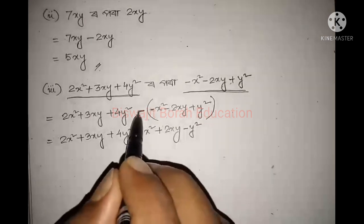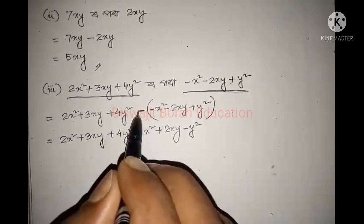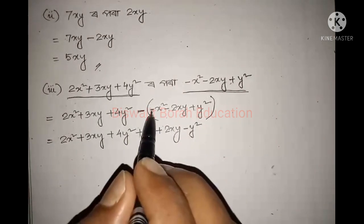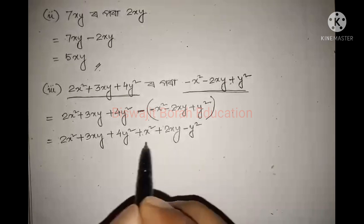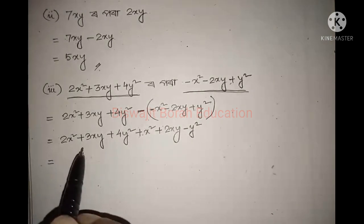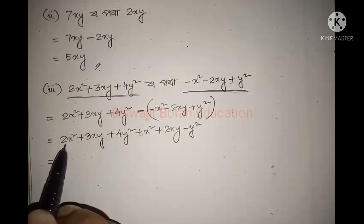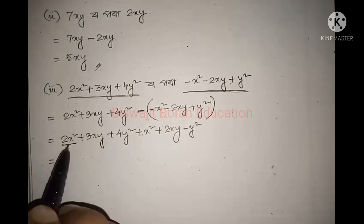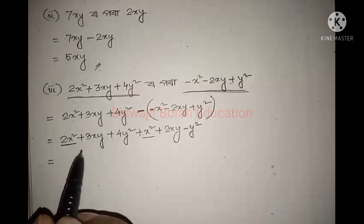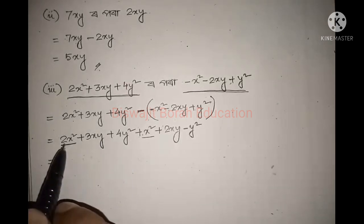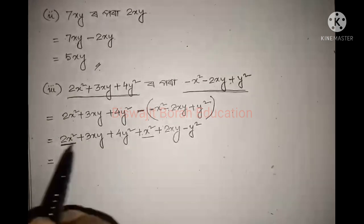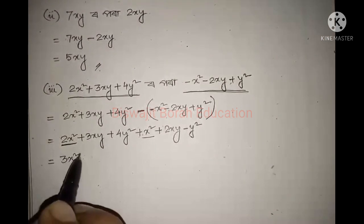Remember what we did: e minus with bracket, minus with bracket, two colors, completed. Now our like terms: write in one place. Our like terms are 2x squared and x squared. We can combine like terms: 2x squared plus x squared gives us 3x squared.